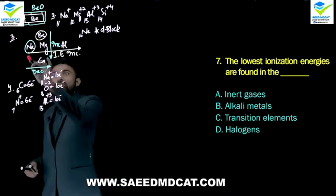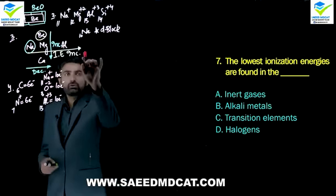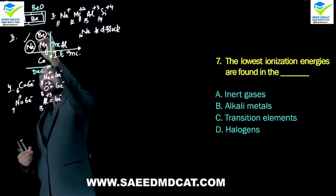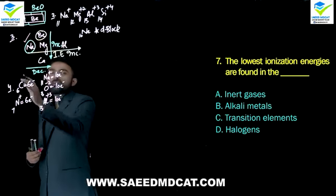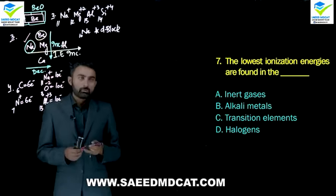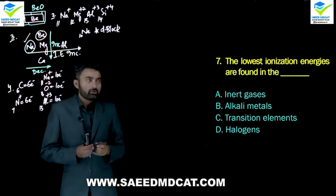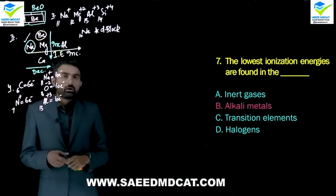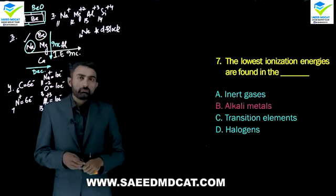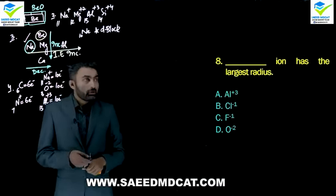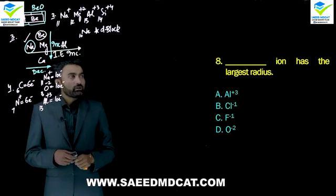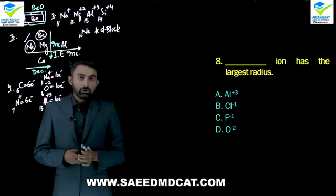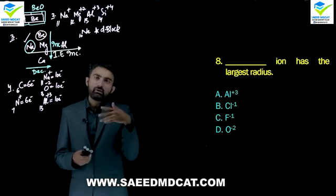Question 7: Lowest ionization energies are found where? Again, left to right ionization energy increases, so the left side of the periodic table has the lowest ionization energies. Those elements are the alkali metals, so beta option: alkali metals.